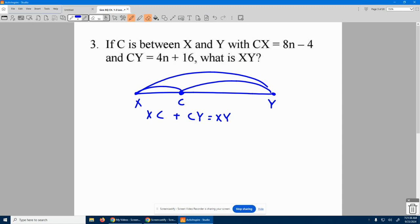So now let's just fill in. What is XC's distance? Well, XC's the same as CX. This is worth 8N minus 4. CY is worth 4N plus 16.